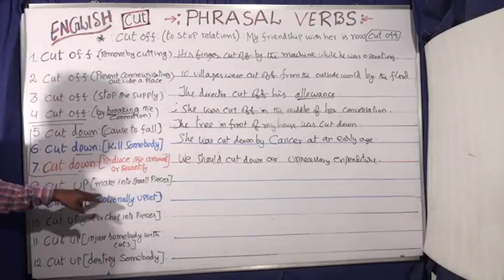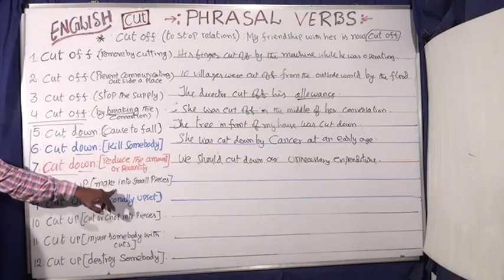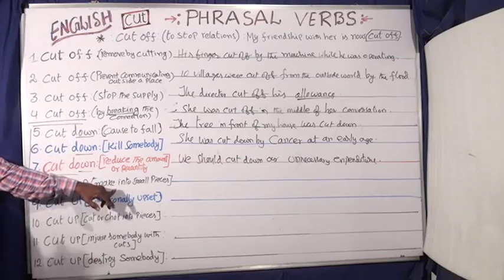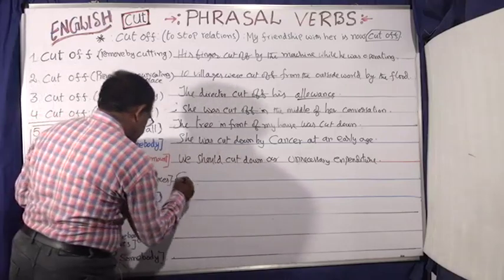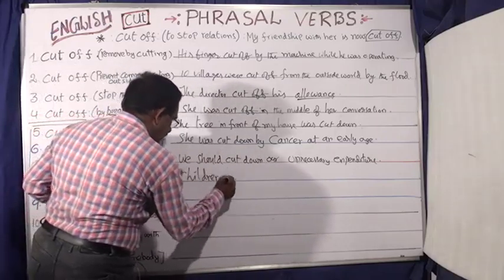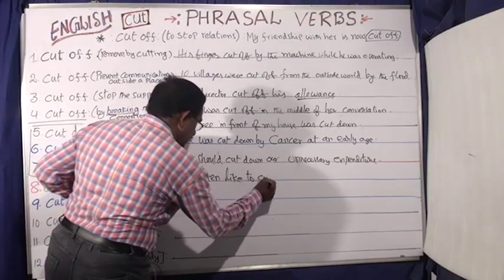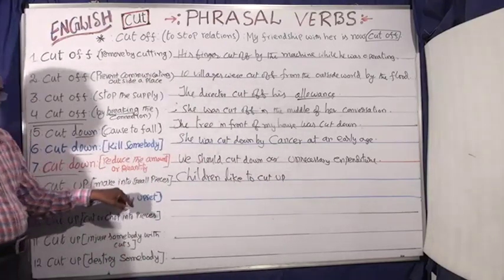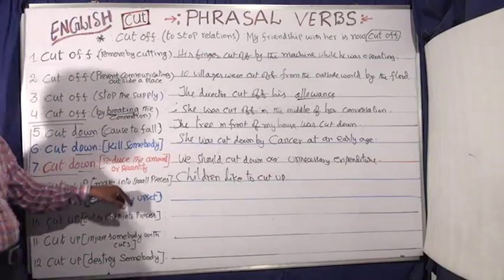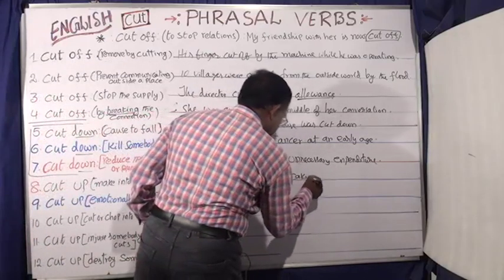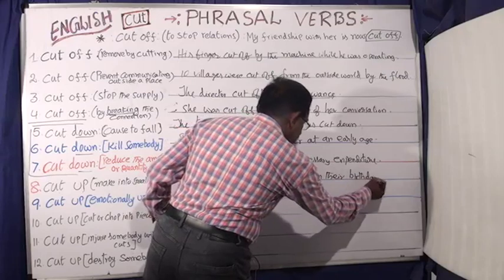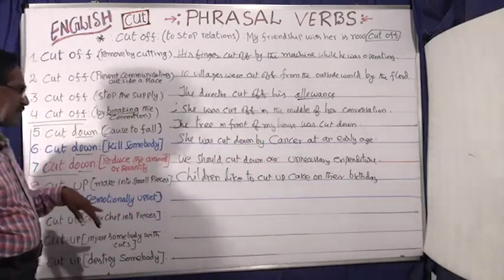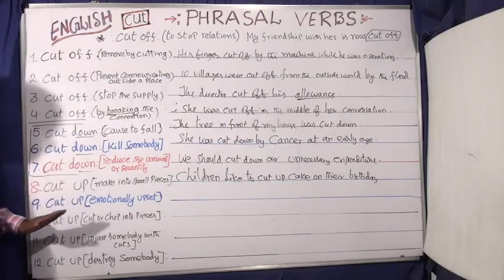Now 'cut up' — one meaning is to make into small pieces. For example: Children like to cut up cake on their birthday. This means to cut something into pieces.